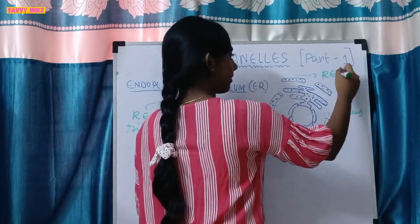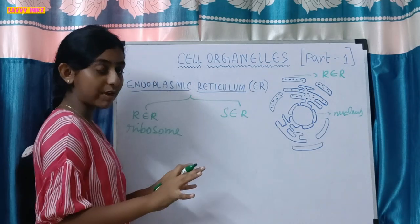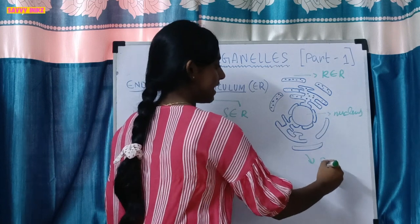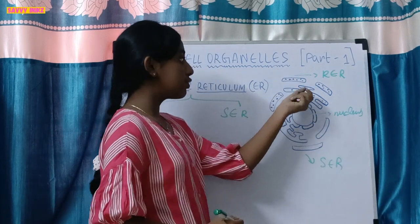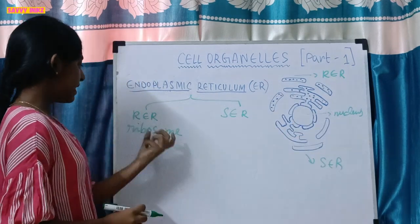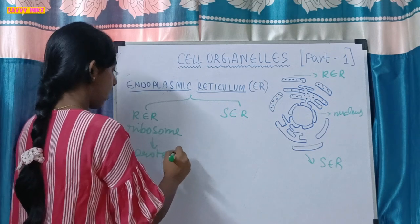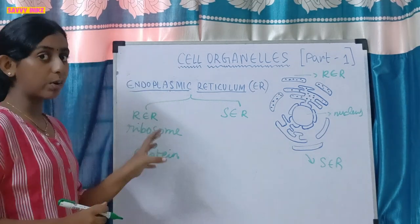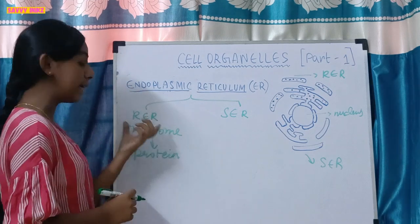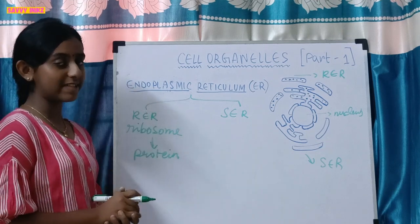The SER does not have ribosomes — that's why it appears smooth. If there are ribosomes, it's RER; no ribosomes, then it's SER. These ribosomes are the site of protein synthesis in the cell, and they are embedded on the rough endoplasmic reticulum surface.